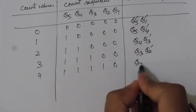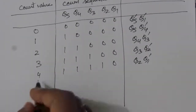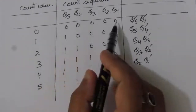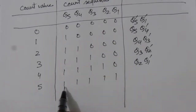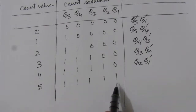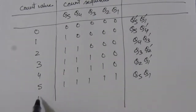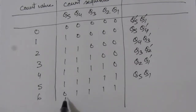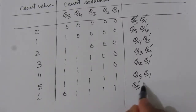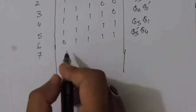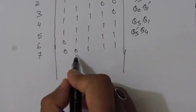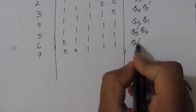For count 5: sequence is 11111 — all ones — so we consider the first and last, giving Q5 · Q1. For count 6: sequence is 01111, there is a 0 adjacent to a 1 at Q5=0 and Q4=1, giving Q5̄ · Q4. For count 7: sequence is 00111, the adjacent transition is Q4=0 and Q3=1, giving Q4̄ · Q3.